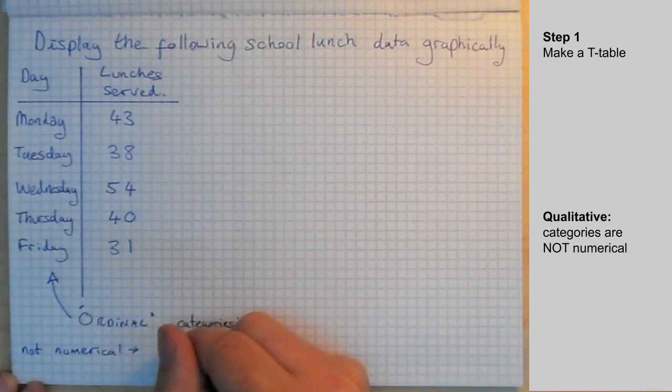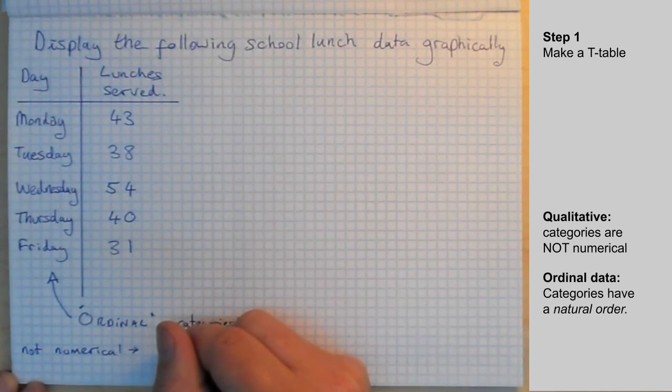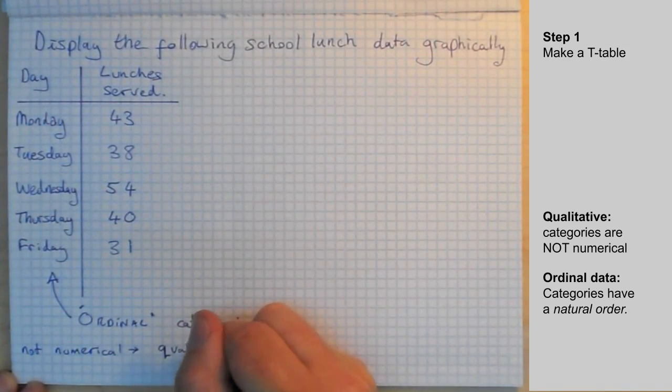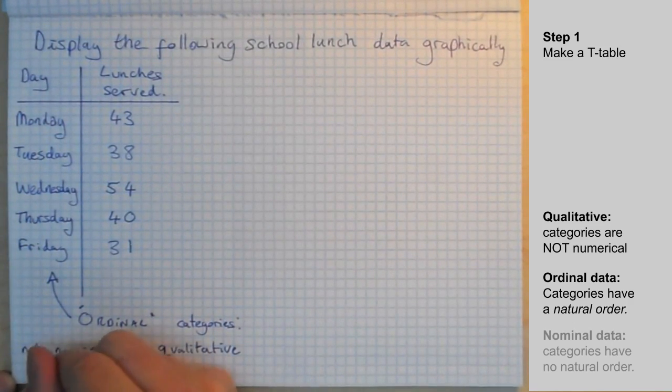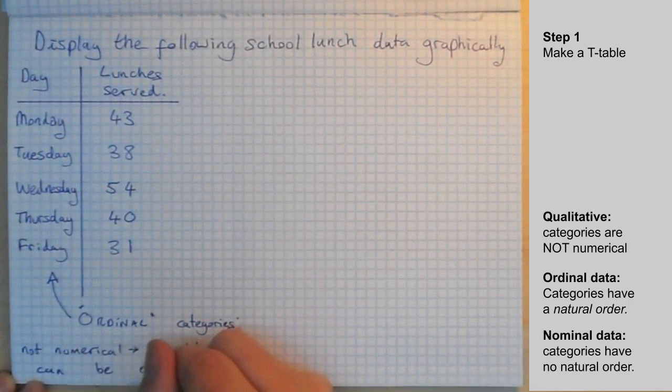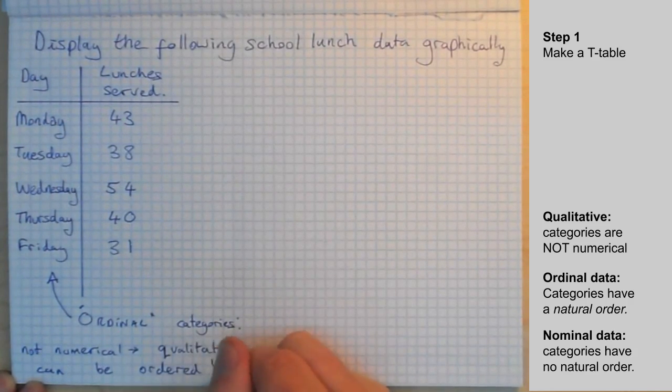They can be ordered though, so they are ordinal categories. Don't get confused. Clearly the number of lunches served, that data is numerical, but the categories themselves are not numerical. So it's qualitative categories and they are ordinal because they can be ordered.